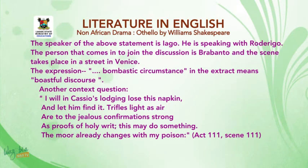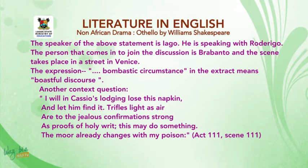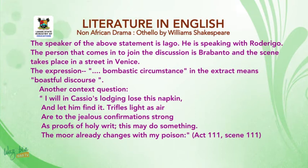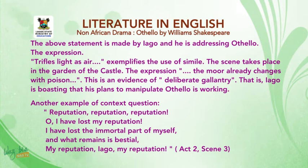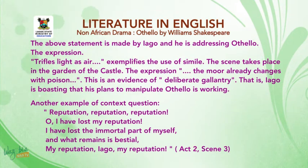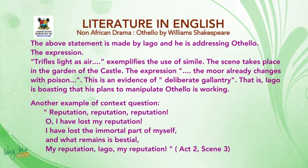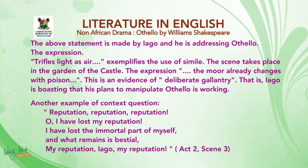The next context question reads: 'I will, in cautious lodging, lose this napkin and let him find it. Trifles light as air are to the jealous confirmations strong as proofs of holy writ. This may do something. The Moor already changes with my poison.' Act three, scene three. This statement is made by Iago. The expression 'trifles light as air' exemplifies the use of a simile. The scene takes place in the garden of the castle. The expression 'the Moor already changes with my poison' is evidence of deliberate villainy — Iago is boasting that his plans to manipulate Othello are working.